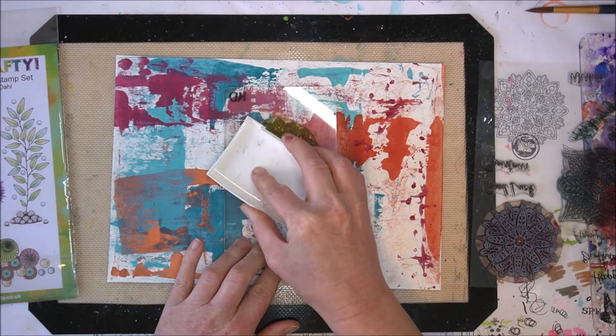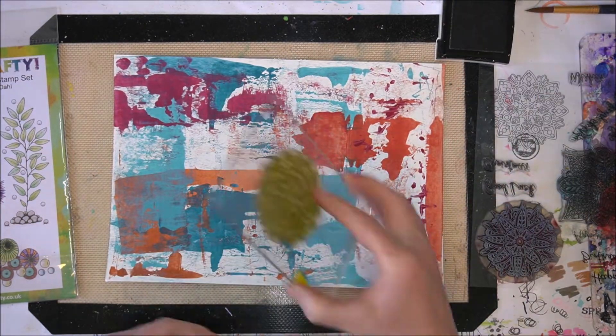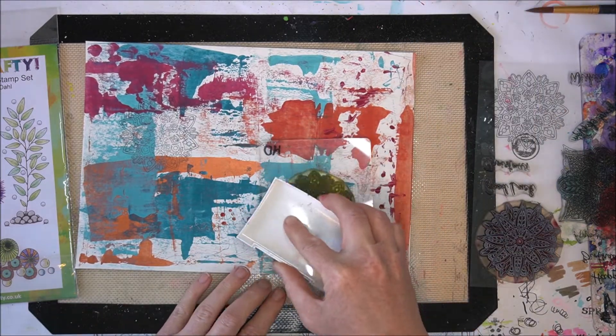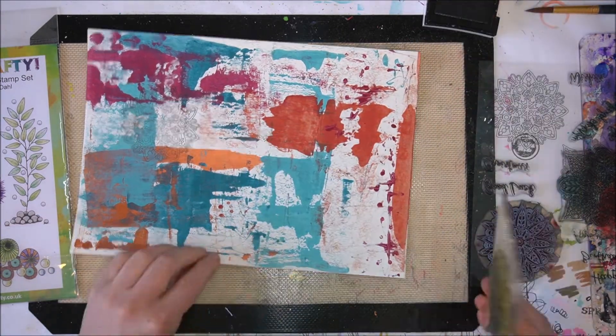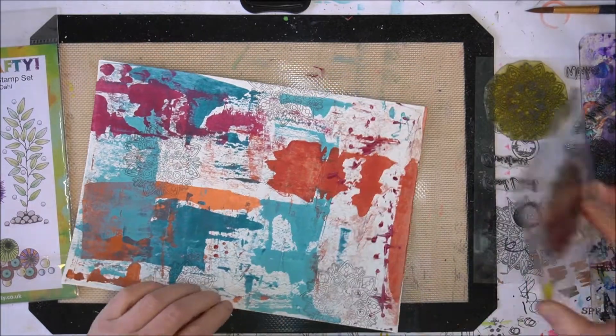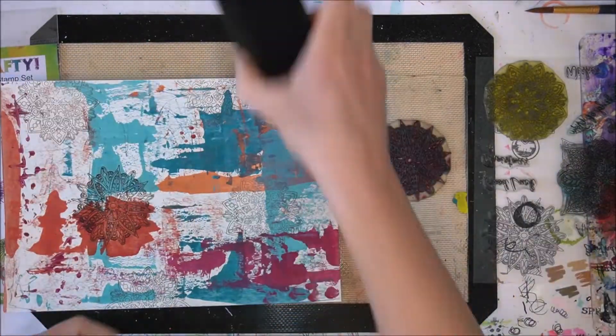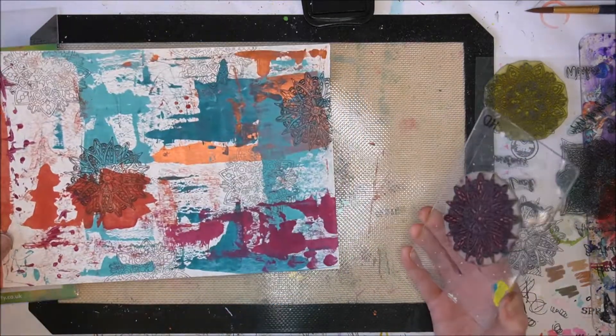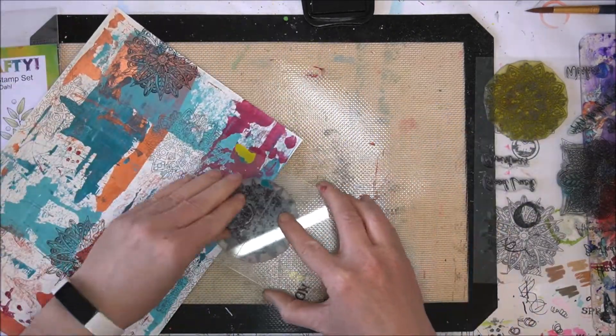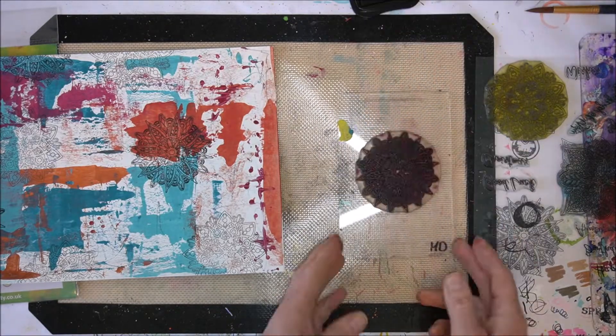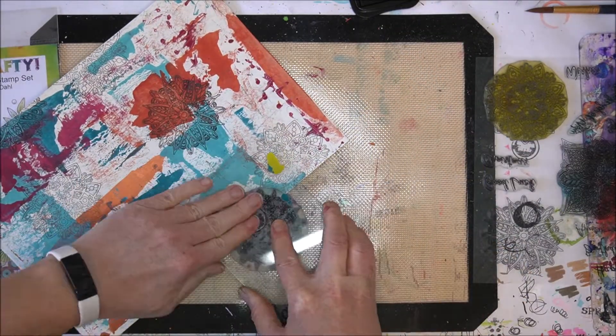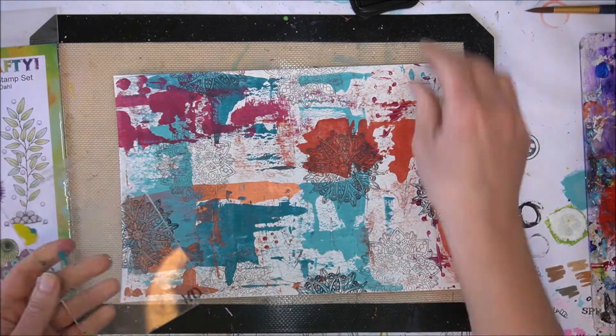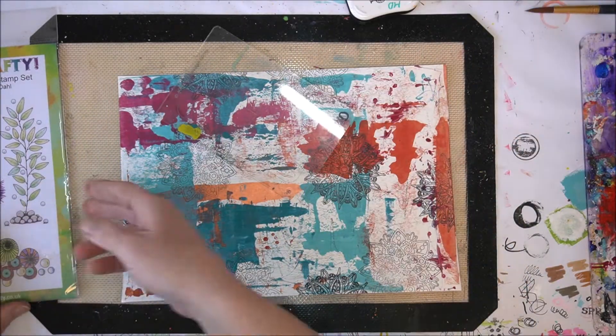Now it's time for some stamping. First I use my Just Doodling stamp set four and add both gray and black stamping. Then I add some color stamping using smaller stamps from my Bubbles and Flowers stamp set.